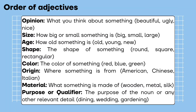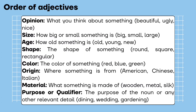Order of adjectives. When using multiple adjectives to describe a noun, they generally follow a specific order. Opinion — what you think about something: beautiful, ugly, nice. Size — how big or small something is: big, small, large. Age — how old something is: old, young, new. Shape — the shape of something: round, square, rectangular.